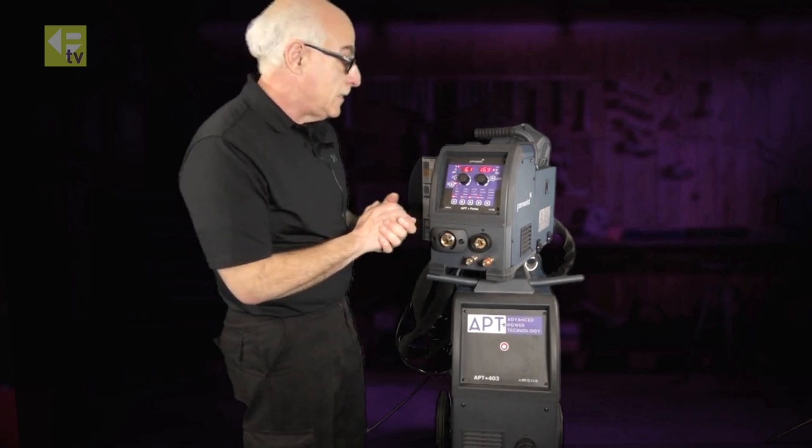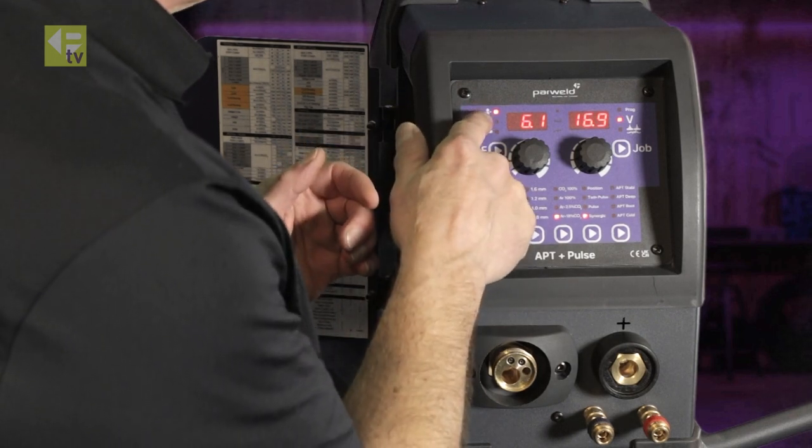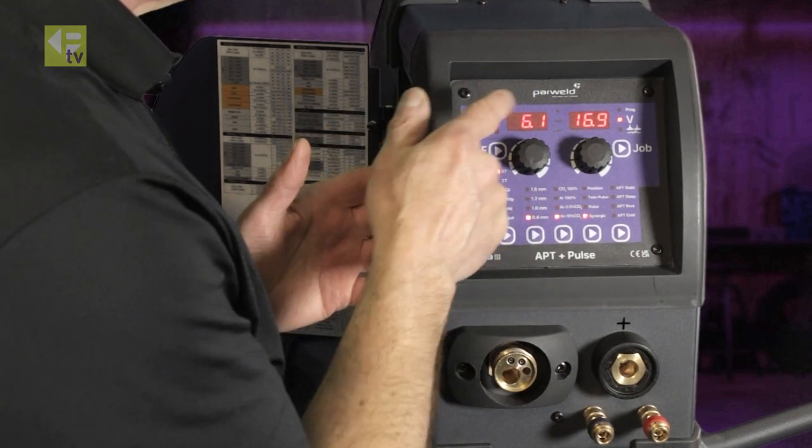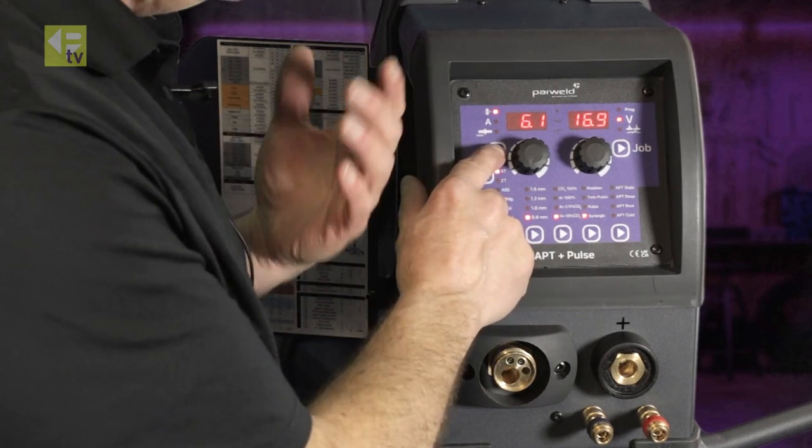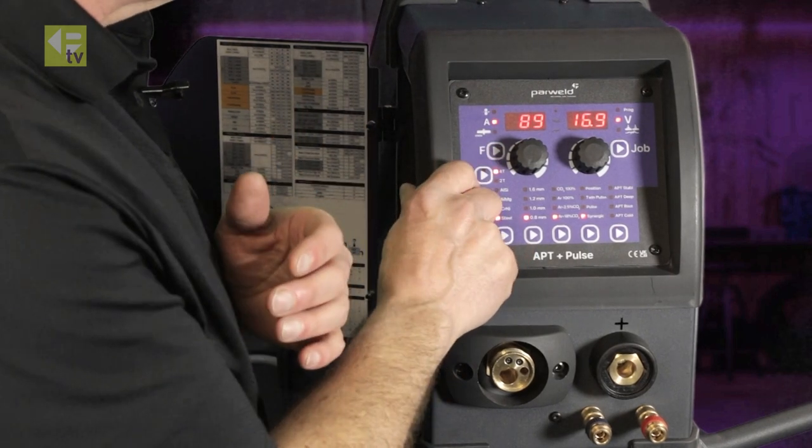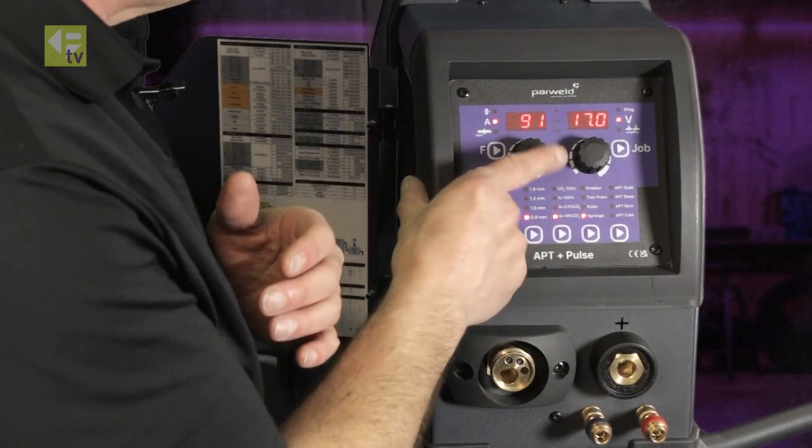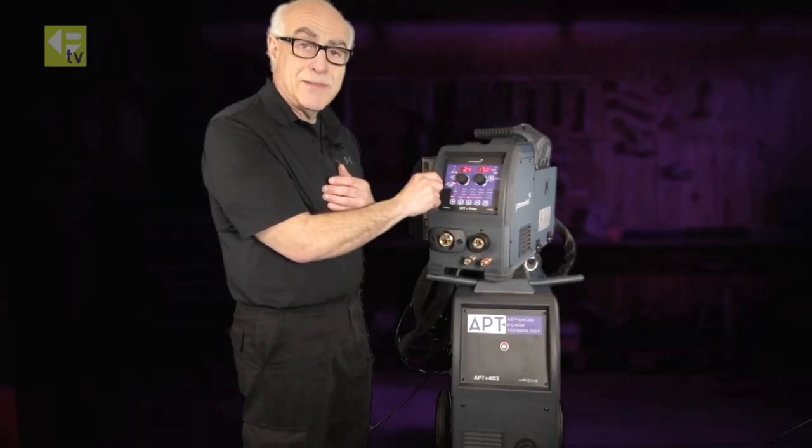As an example, as we see now, the wire feed speed is highlighted there at 6.1. If you don't like running at wire feed speed and you'd rather set it at amperage, we can go down to amps and we can set the amperage.